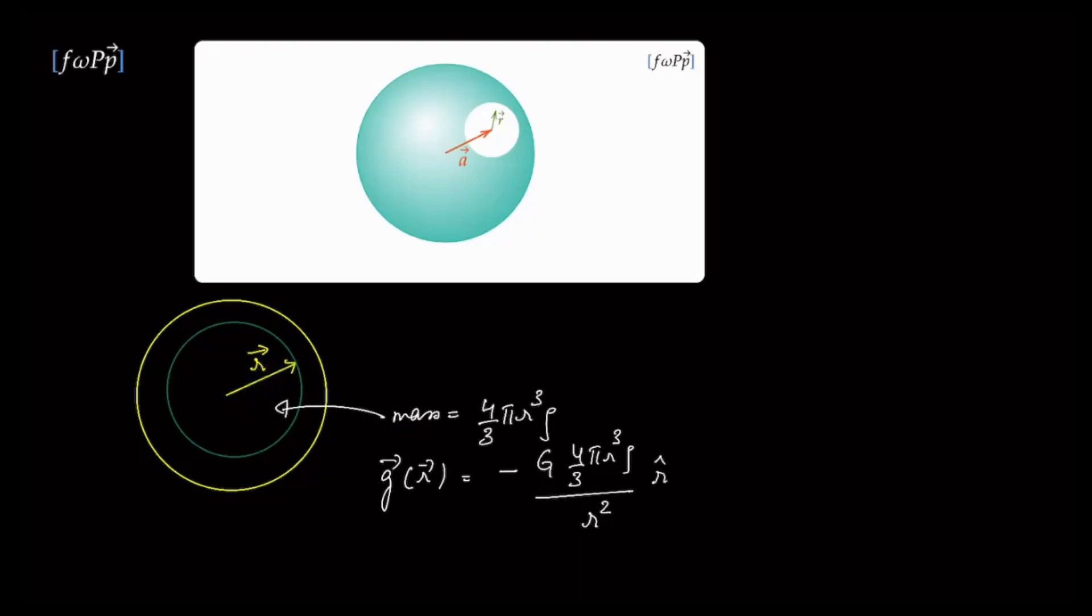It's opposite to the vector r, and therefore it's the negative direction of the unit vector r̂. Therefore, g has a nice simple form. The point to note here is the gravitational field at that point is some number times the vector position of that point.